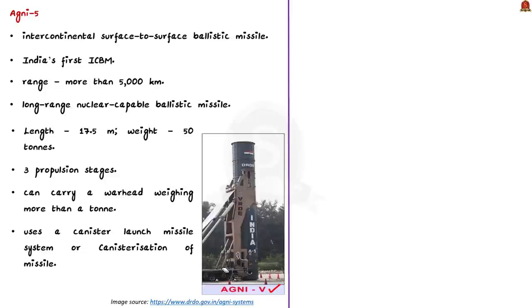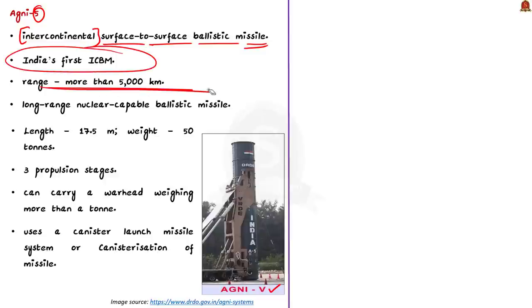Agni 5 is India's first intercontinental surface-to-surface ballistic missile, ICBM, with a range of more than 5,000 kilometers. It is 17.5 meters in length, weighs around 50 tons, and has three propellant stages. It can carry a warhead weighing more than a ton. Agni 5 has a unique advantage — it uses a canister launch missile system, or canisterization. In this technology, warheads are pre-mated to the delivery vehicle and kept sealed for storage and transport.